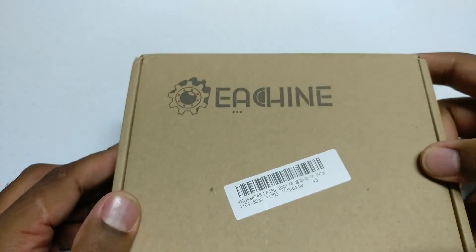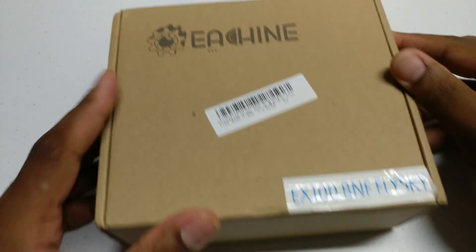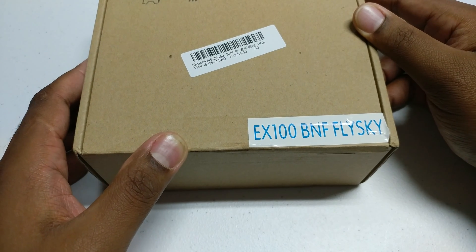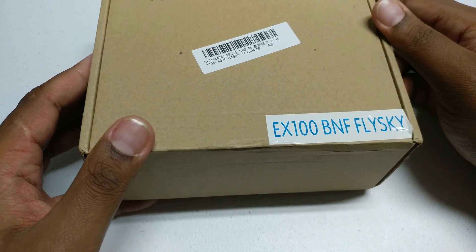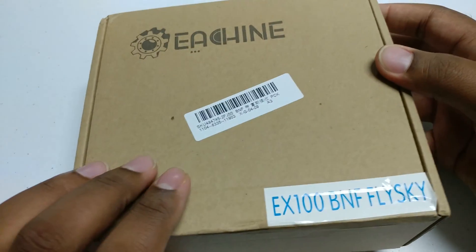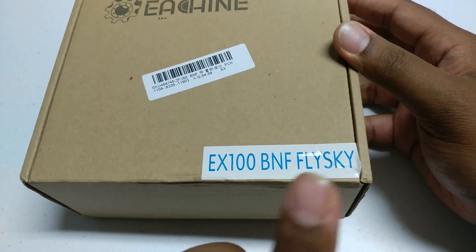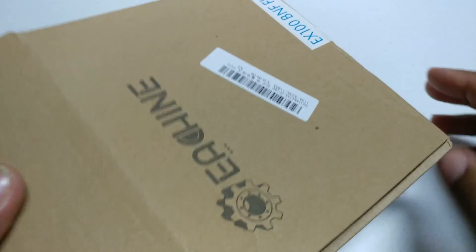Hey guys, here today with a quick unboxing and initial bench review of this brown box. What do we have in the box? E-Sheen EX100 Bind and Fly. This is a 100mm Bind and Fly micro quadcopter. This is the FlySky version. Let's go ahead and see what's in the box.